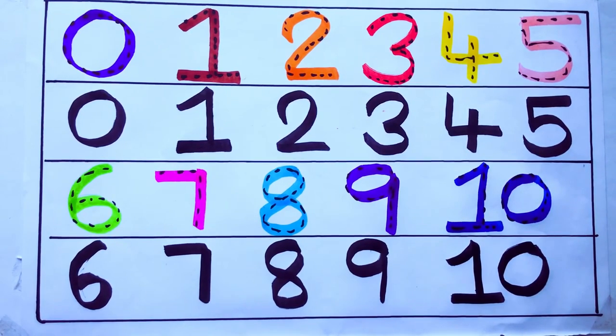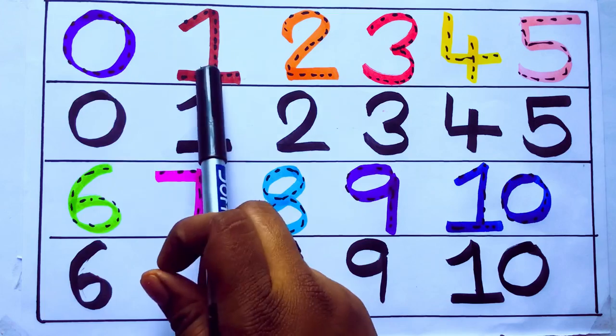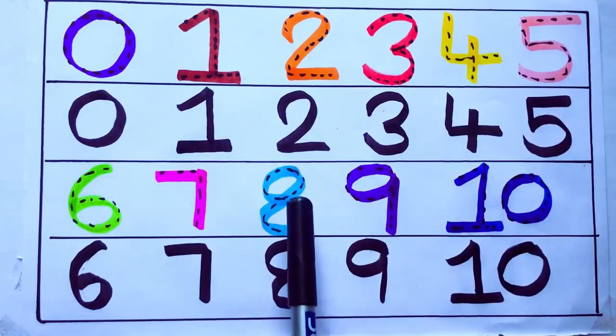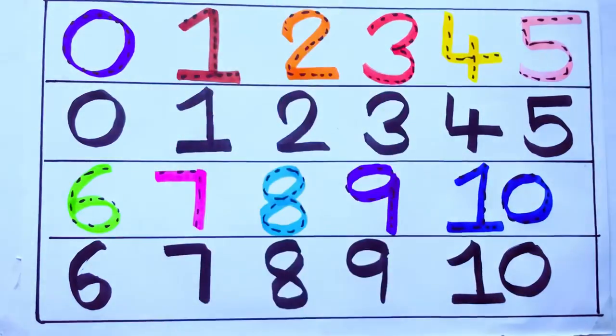One second learning numbers. 0, 1, 2, 3, 4, 5, 6, 7, 8, 9, 10. Okay. Bye kids.